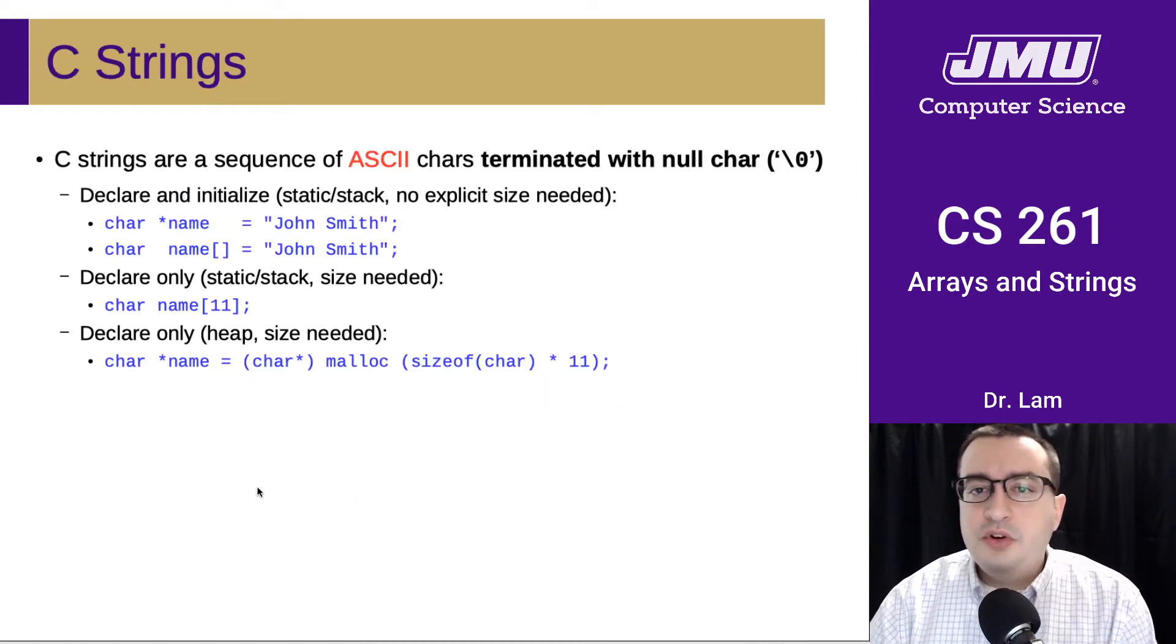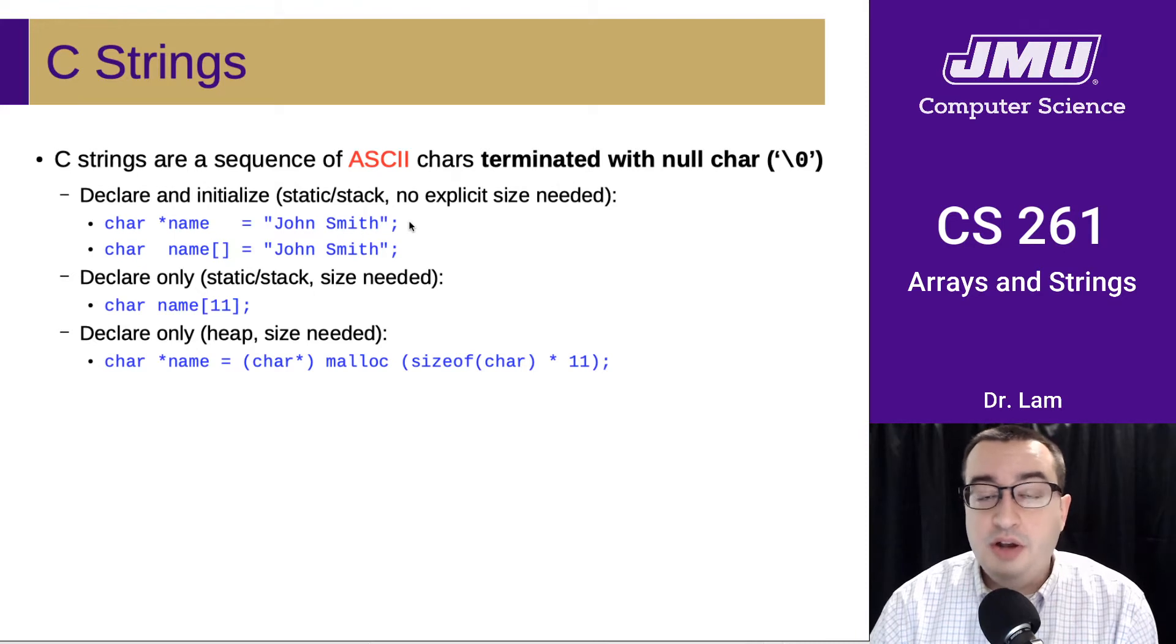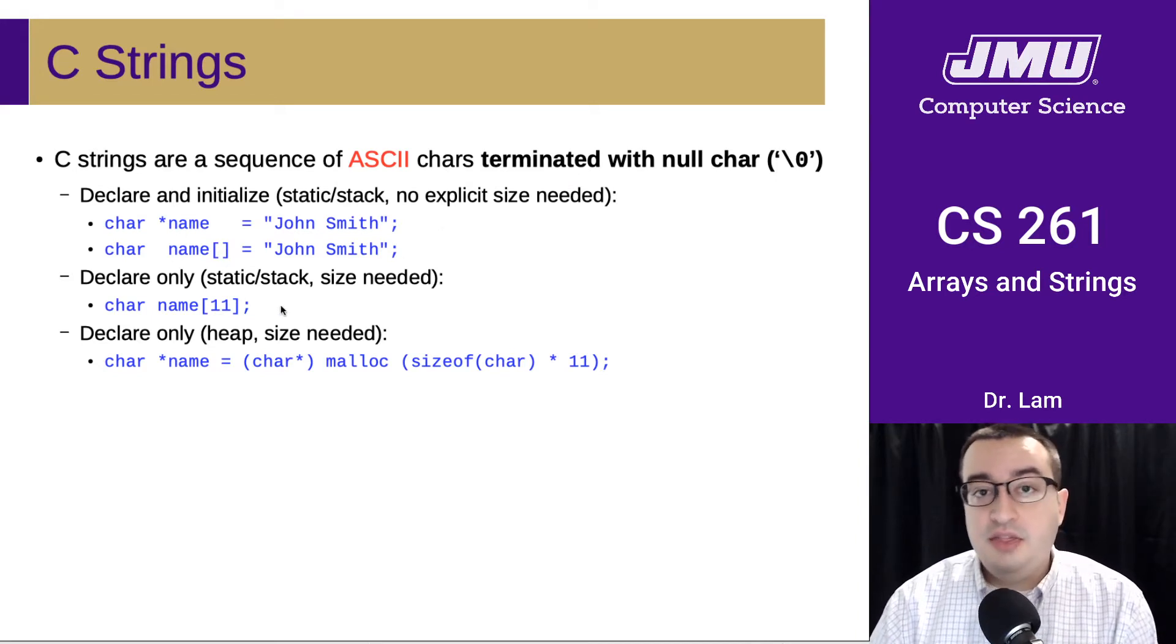There are several different places that a string can be located in memory. One way to create and initialize strings is to put them either on the stack or in some static region. If you have a string that you want to initialize with something you know the value of while you're coding your program, you can declare it this way. This means you don't have to specify an explicit size; it'll just calculate the size you need to store the string you're giving it. If you don't know what text you want to store in a string, you can just declare it and give it a size, and it'll be uninitialized until you're ready to use it.